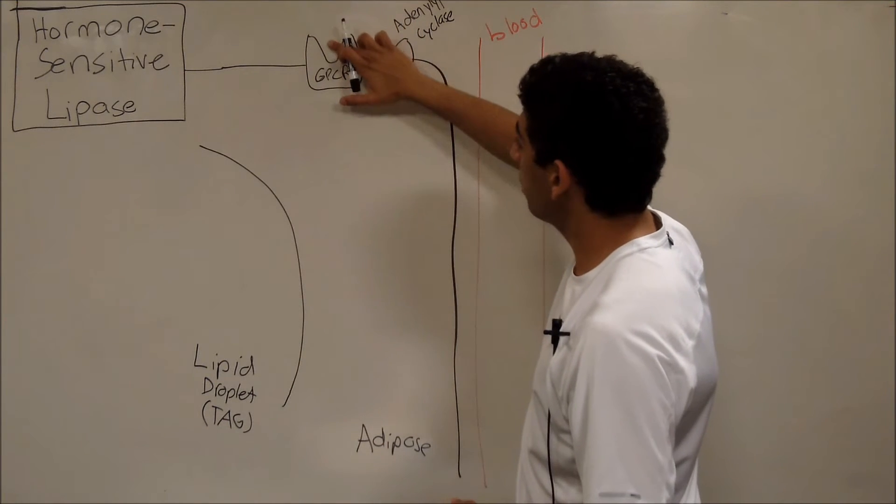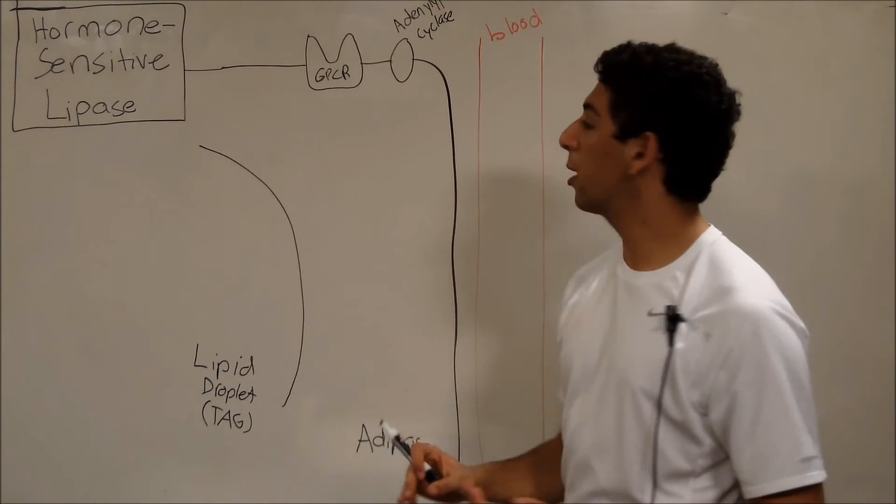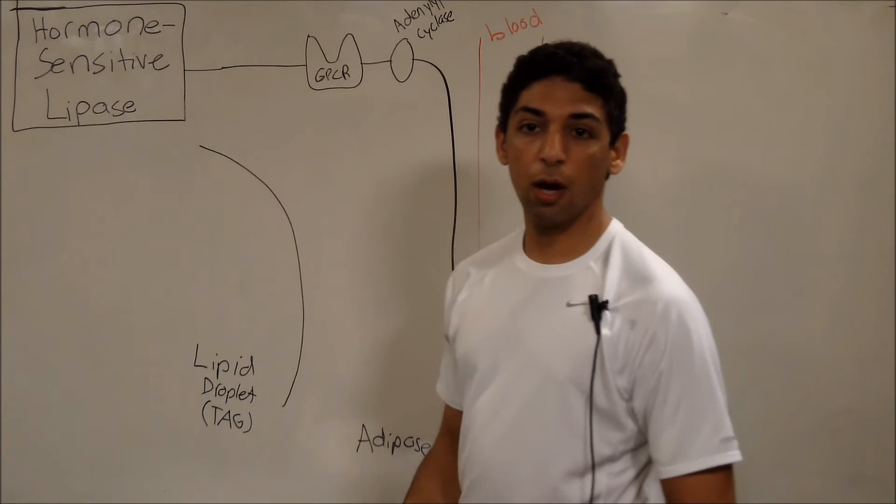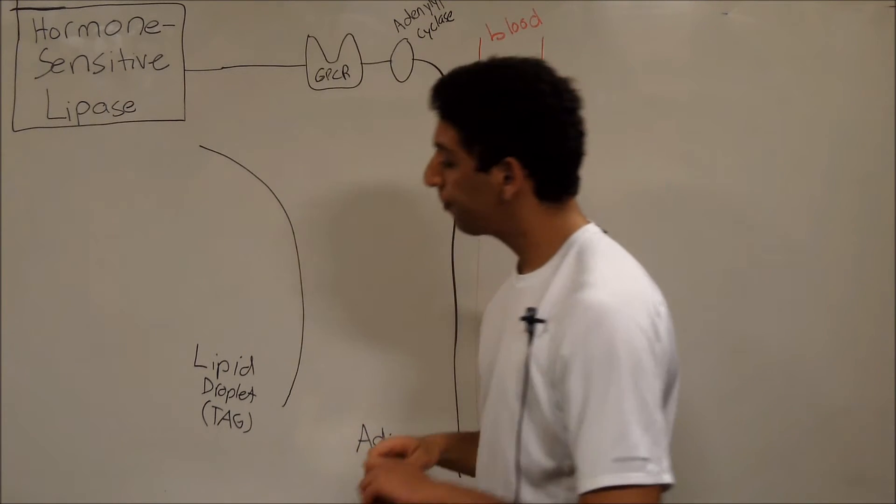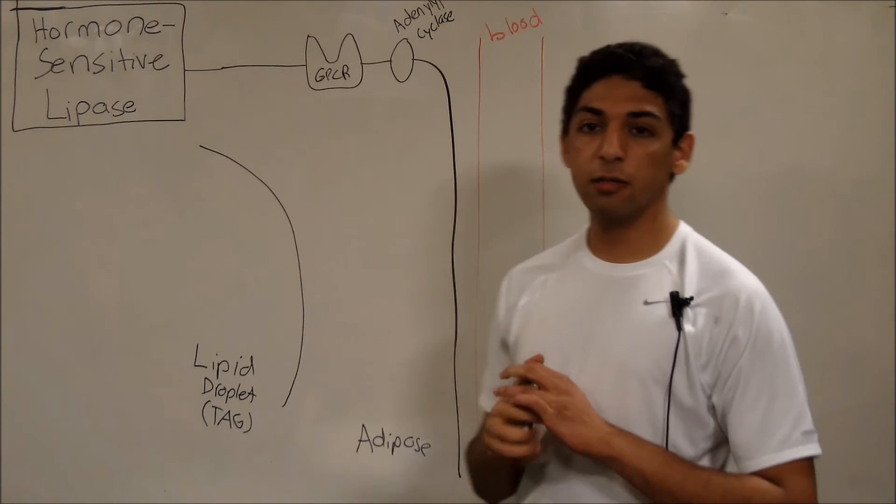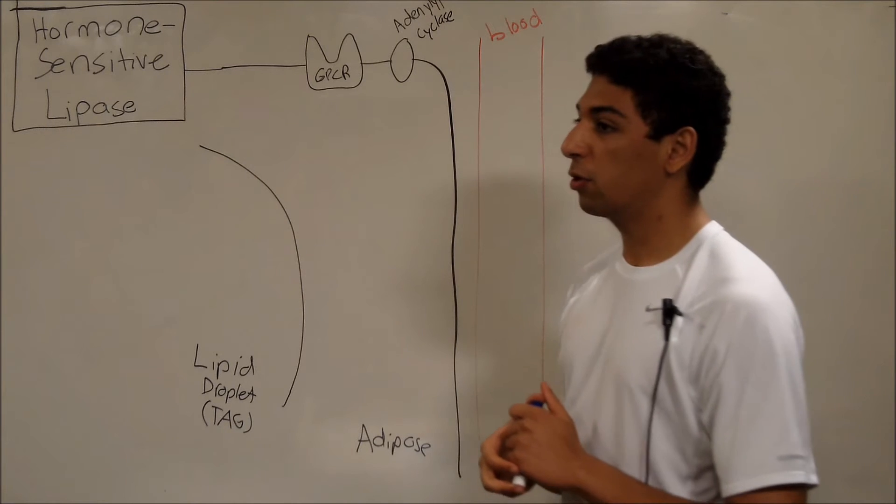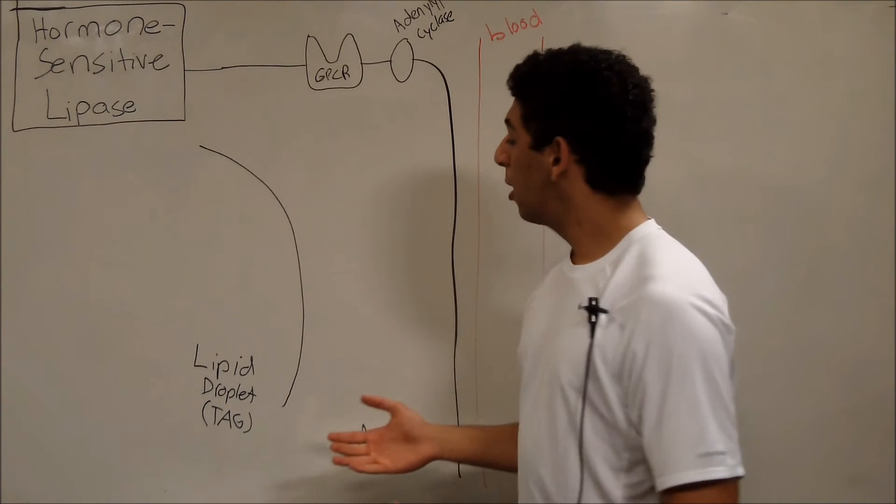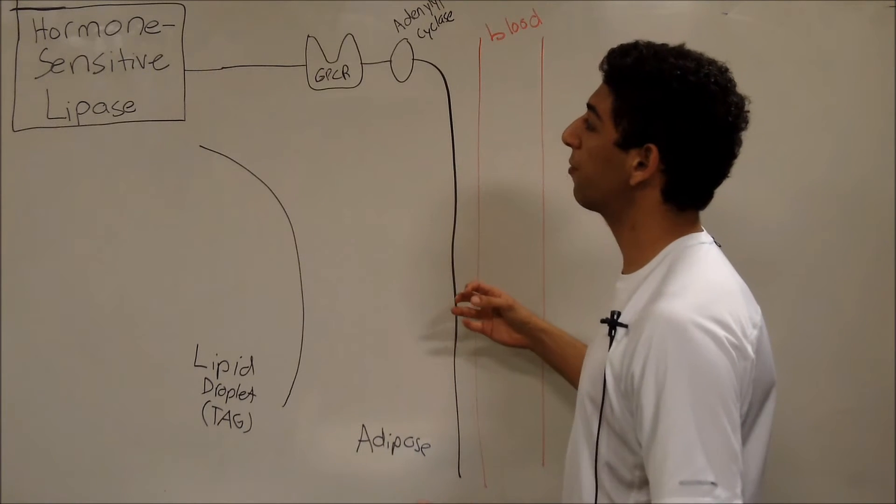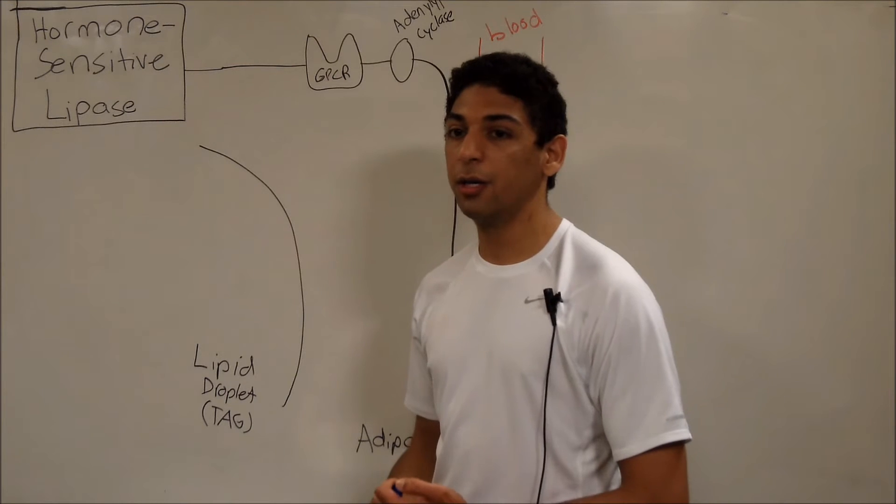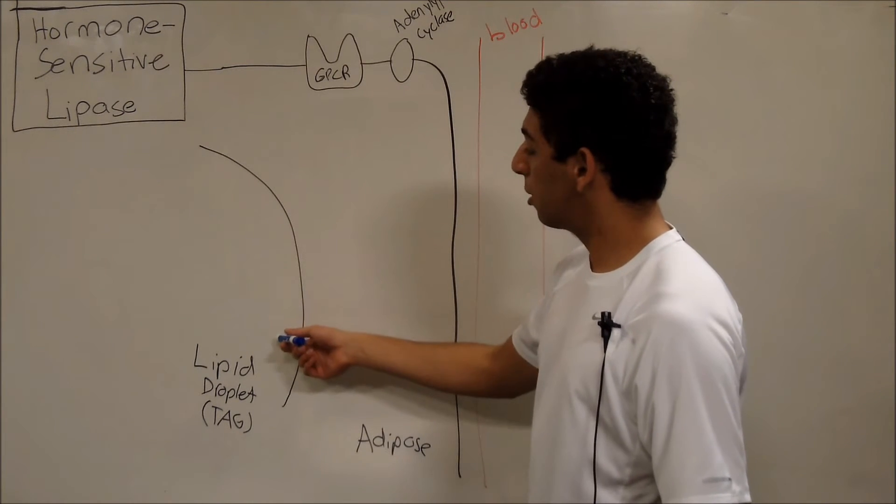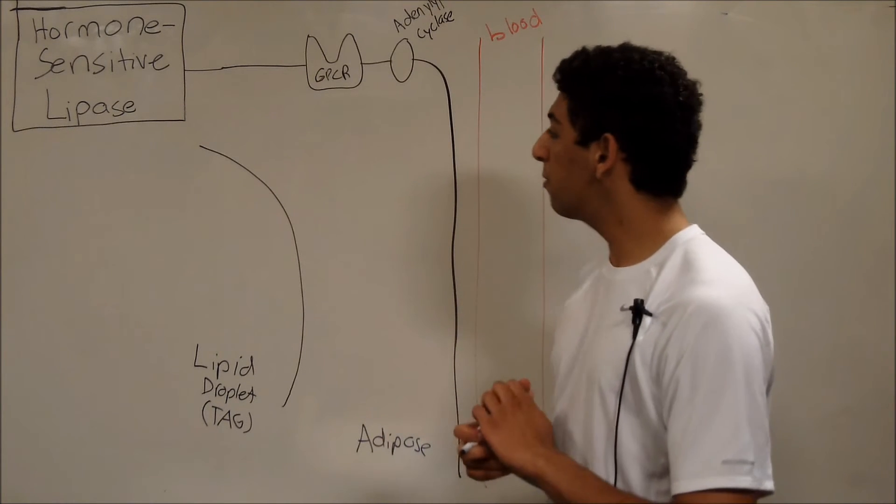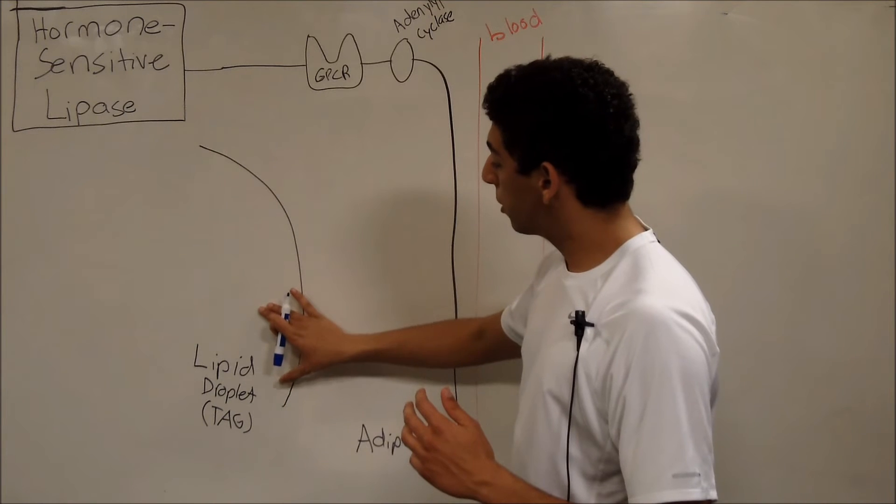Insulin, when insulin comes in and binds to this G-protein coupled receptor, nothing happens. So we're not going to draw out this whole pathway because, well, insulin doesn't do anything. The one that does do something is glucagon. So that's the pathway that we're going to talk about. And if you think about it, it makes a lot of sense. You have insulin in your blood when you have a lot of glucose, right? When you have a lot of glucose, you've got a whole bunch of energy because you're going through glycolysis and the Krebs cycle and electron transport, so you don't need more energy. And the point of breaking apart a lipid droplet is so you can take the energy from it. So if you've got a whole bunch of insulin, that means you've got a whole bunch of energy. You're not going to need more energy. So that's why insulin doesn't actually do anything here. Now, glucagon, on the other hand, is released when there's not a lot of glucose in your blood. When you don't have a lot of glucose, you need some other energy source, which is where fat comes in.